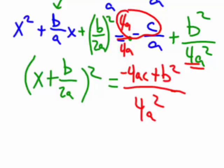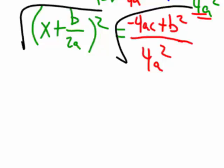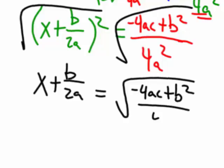And we want to, let's extend my page here. So now I want to get rid of this square. So I got a square root of both sides. So now I got x plus b over 2a equals the square root of negative 4ac plus b squared all over 4a squared.